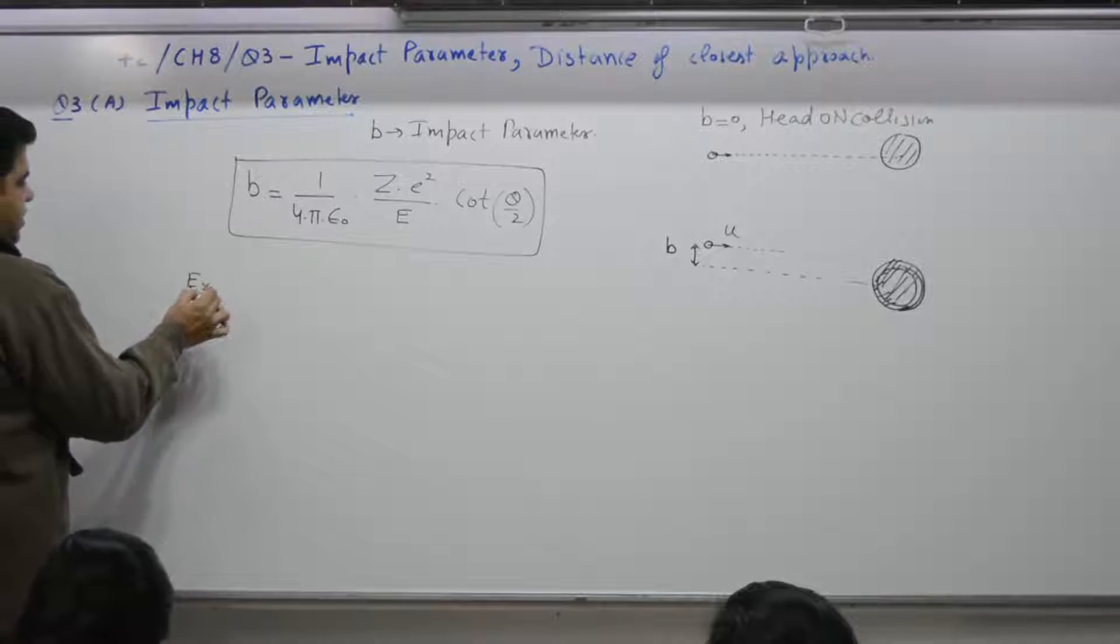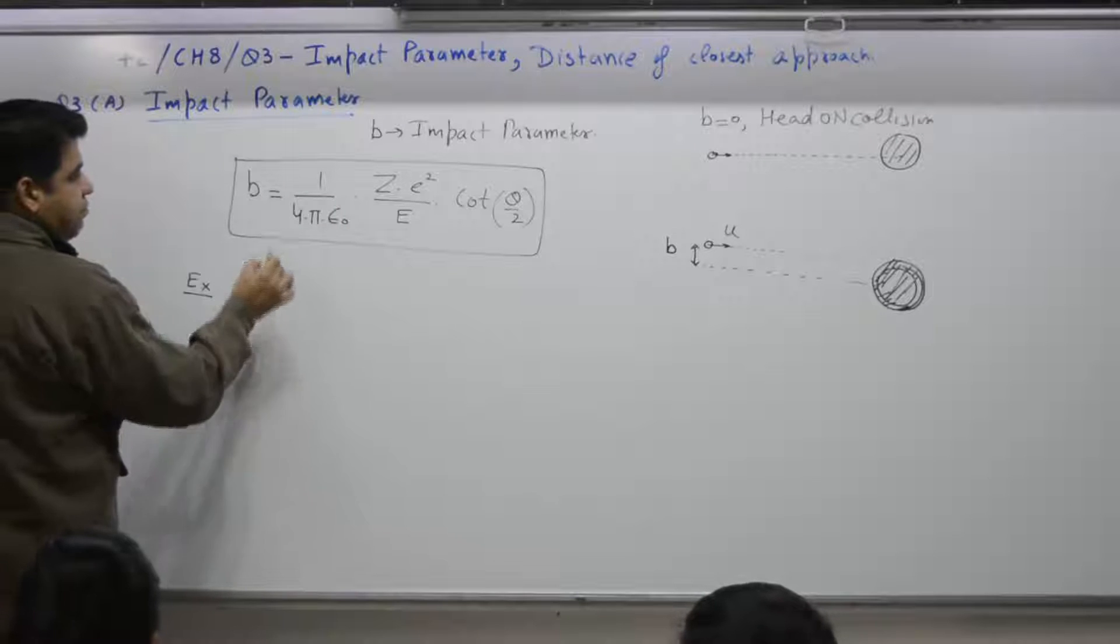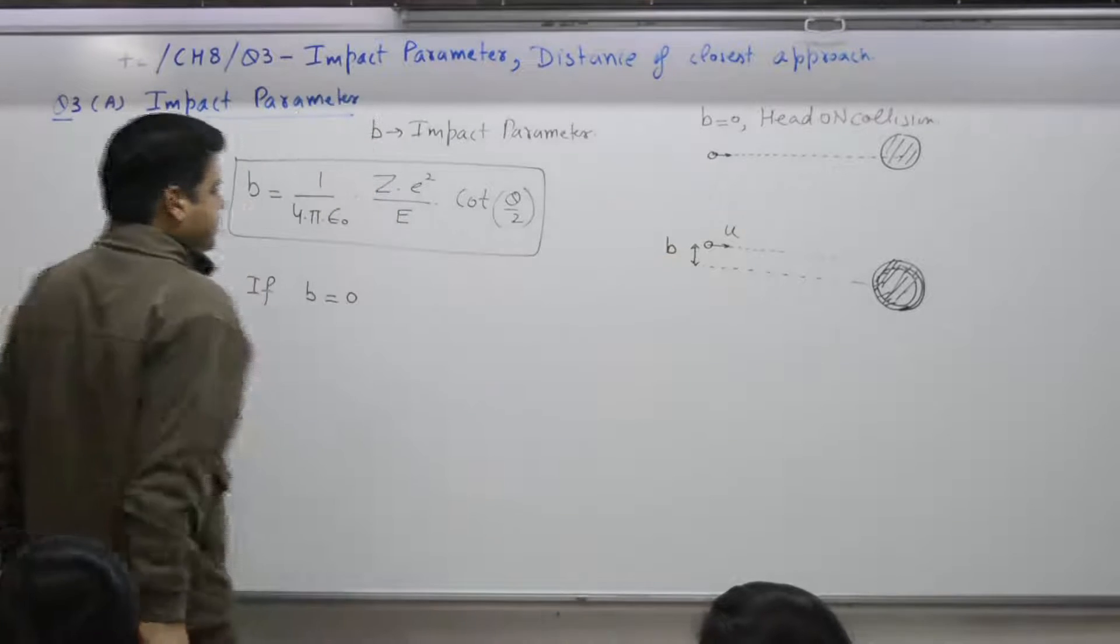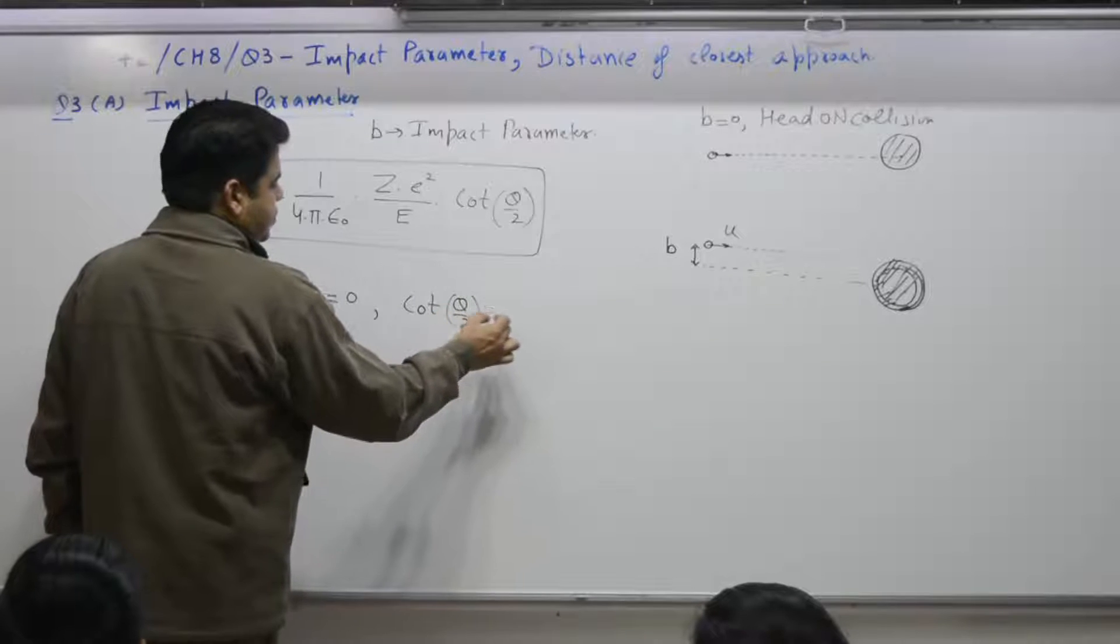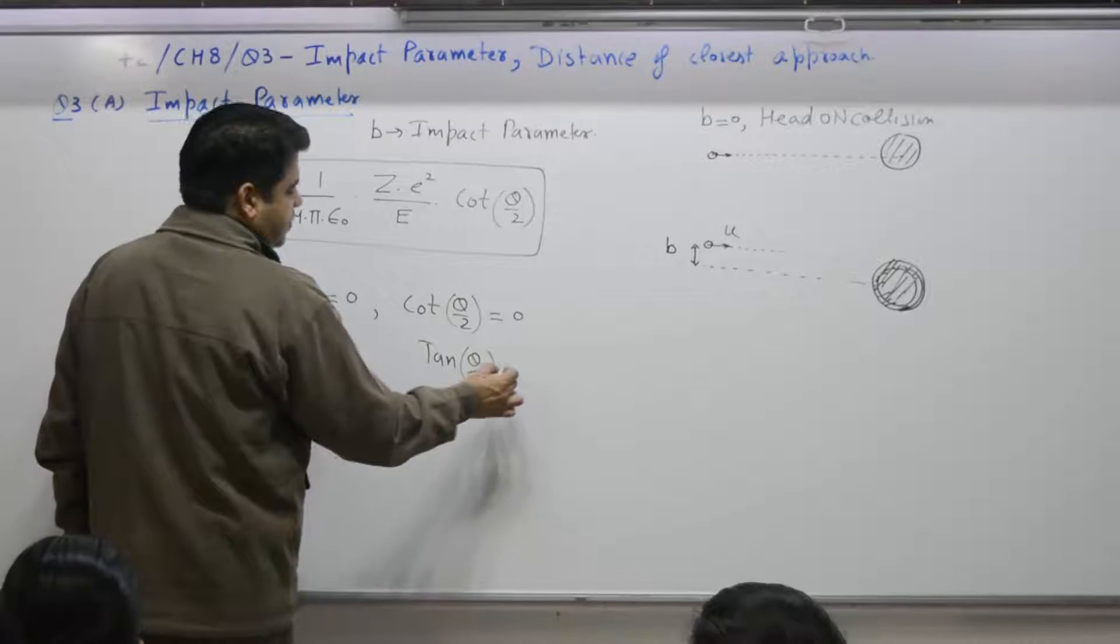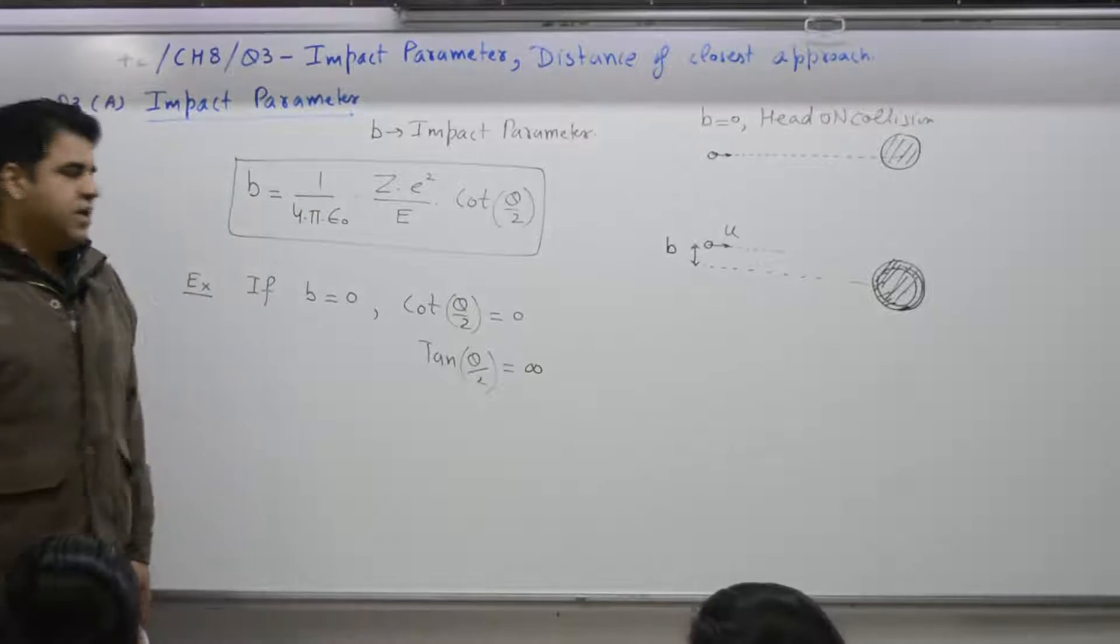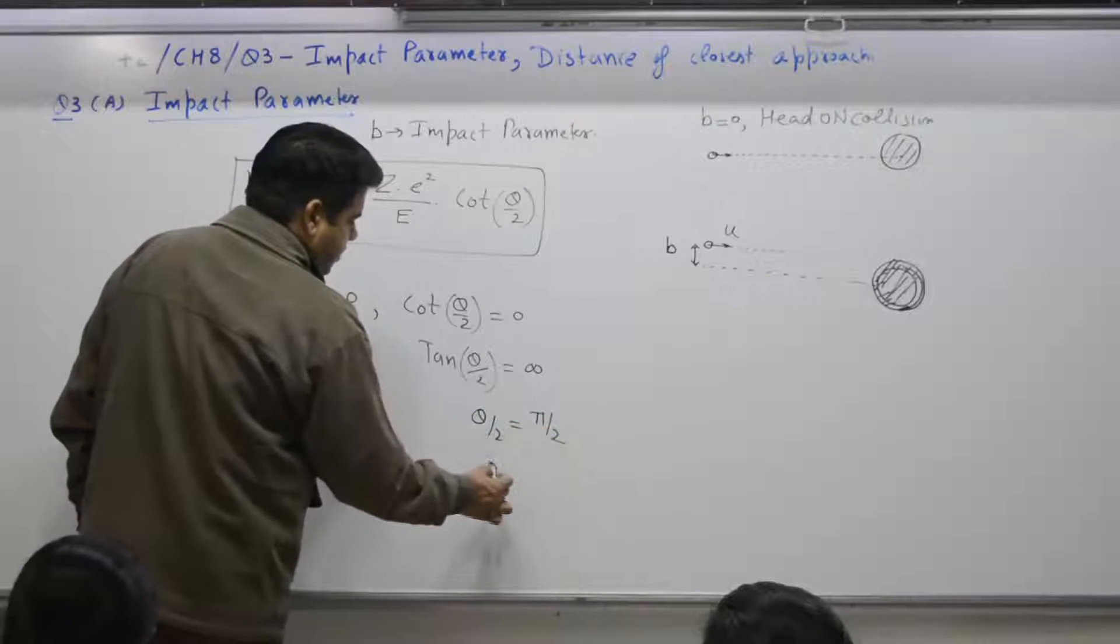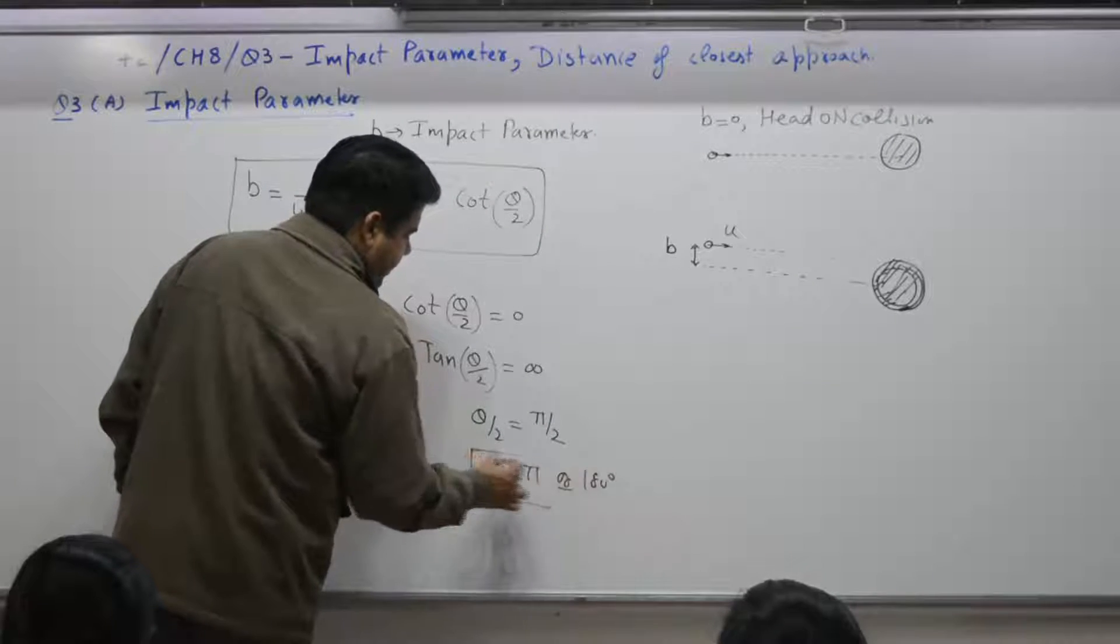Examples. If B is 0, that means we are talking about this case. Then it represents what? Cot theta by 2 is also 0. It means what? Tangent theta by 2 is what? Infinity. Tangent of what angle is infinity? Ninety. So theta by 2 is equal to pi by 2 means what? Theta is equal to pi or 180 degree.